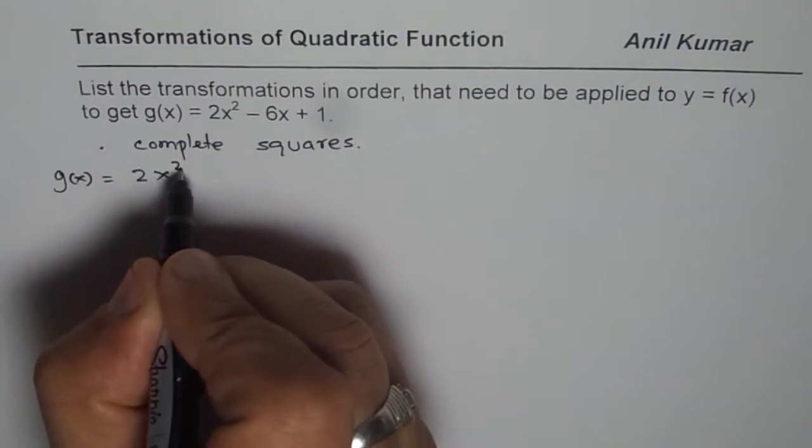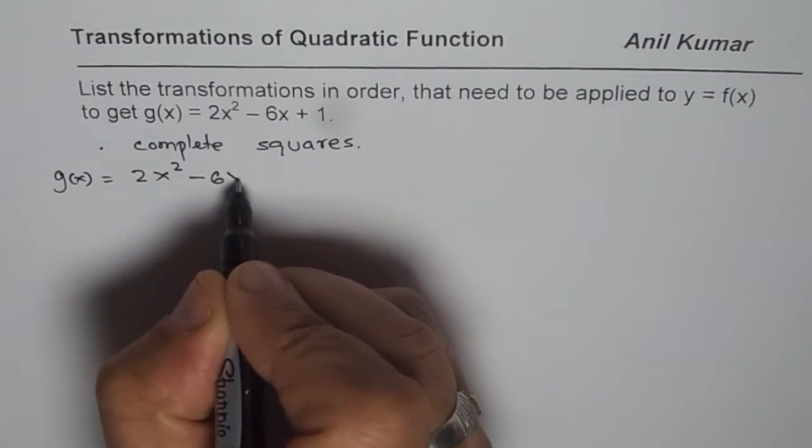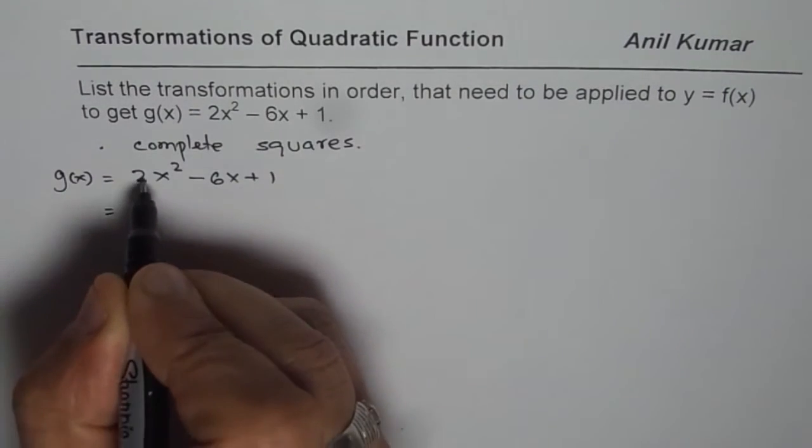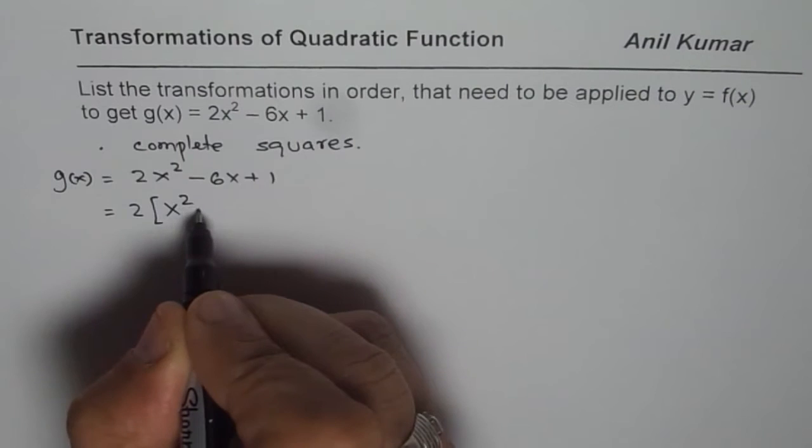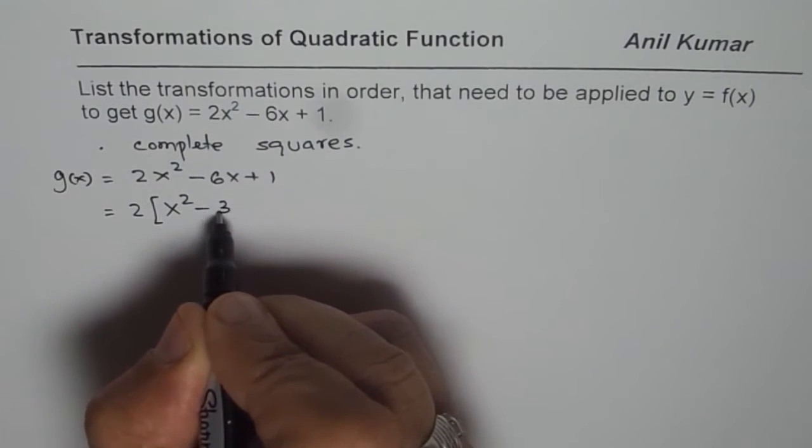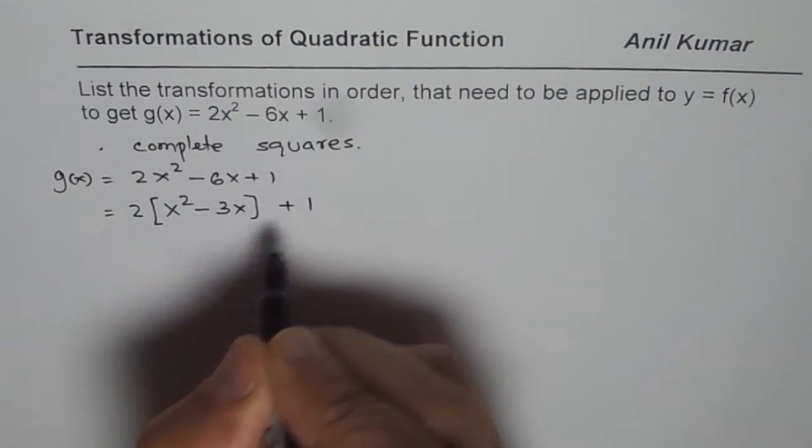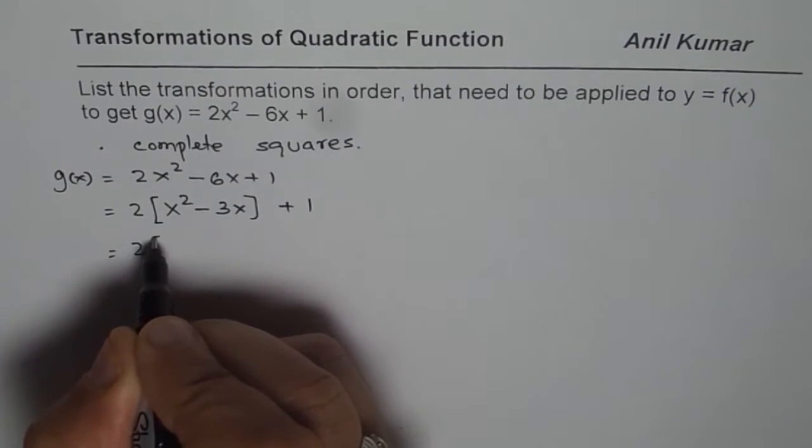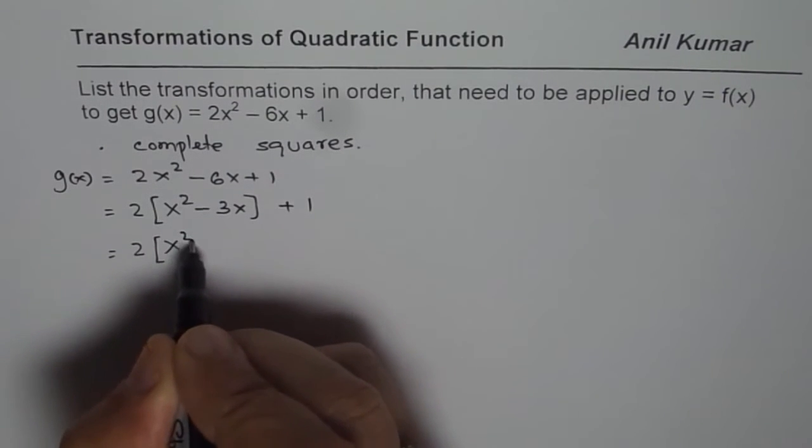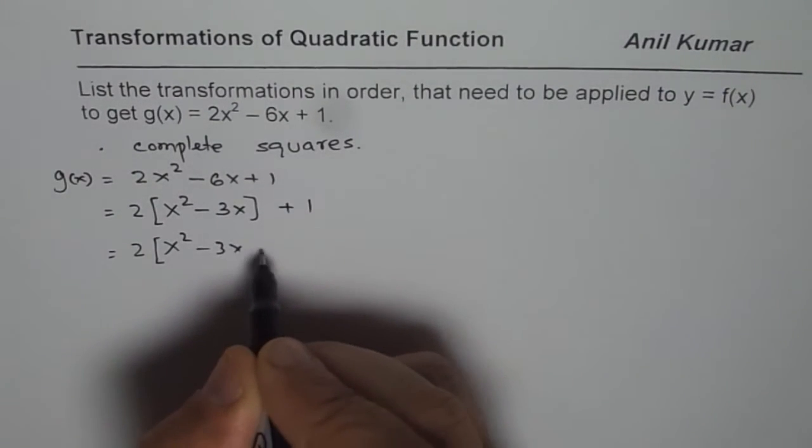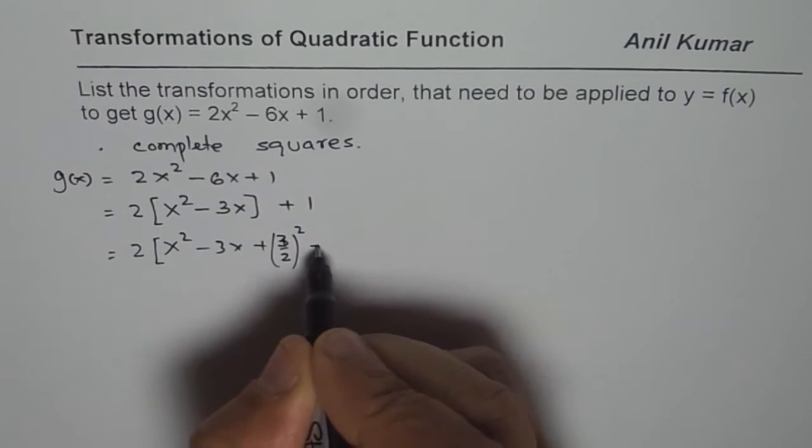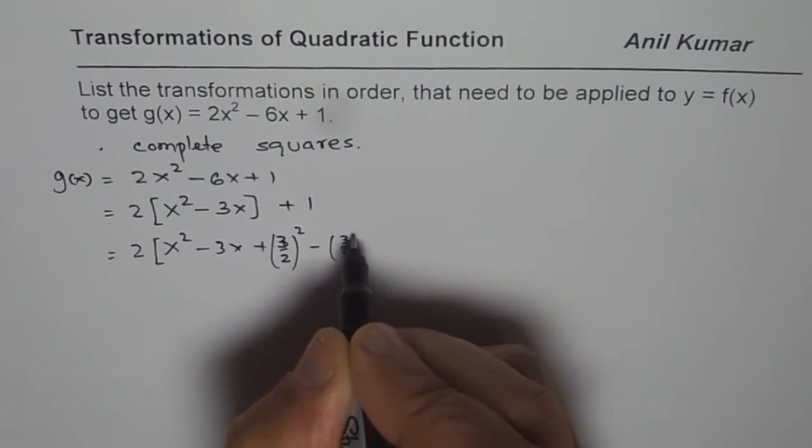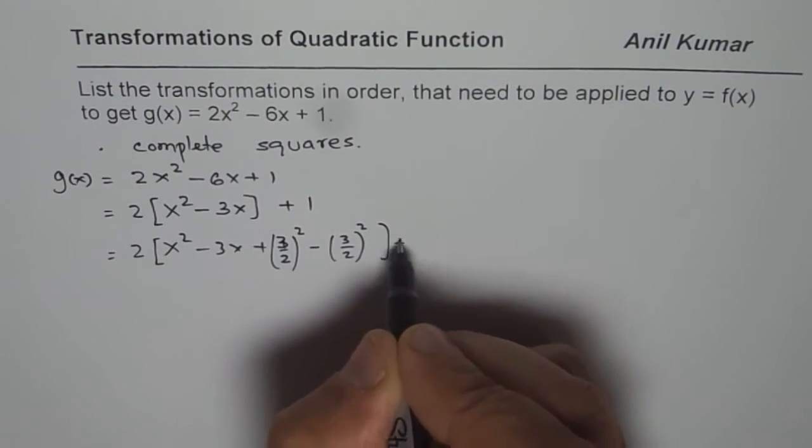At present, g of x is given to us as 2x squared minus 6x plus 1. Let us factor out 2, the leading coefficient. Then you get x squared minus 3x plus 1. And then we can complete the squares by taking half of 3, which is 1.5 or 3 over 2. We will add and subtract its square plus 1.